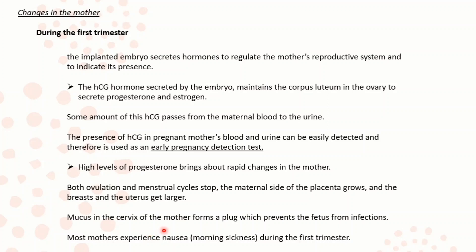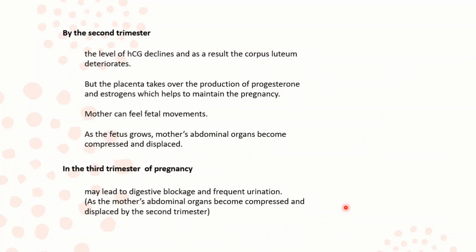Most mothers experience morning sickness during the first trimester. By the second trimester, the level of HCG declines and as a result the corpus luteum deteriorates, but the placenta takes over the production of progesterone and estrogen, which helps to maintain the pregnancy. The mother can feel fetal movements, and as the fetus grows, the mother's abdominal organs become compressed and displaced, which may lead to digestive blockage and frequent urination in the third trimester.